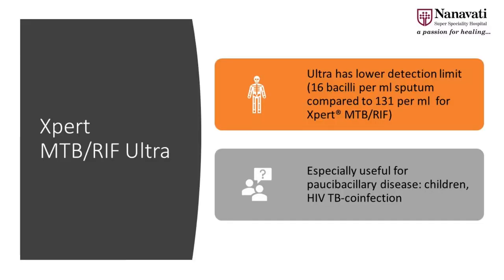The new thing in GeneXpert is the Expert Ultra. The older version used to pick up positive reports only if there were more than 1 bacillus per ml, whereas the new Ultra has a lower detection threshold, needing only 16 bacilli per ml, giving it a very high sensitivity. GeneXpert was originally approved only for pulmonary TB, but with Ultra it would be useful even for extra-pulmonary TB, especially in children who have paucibacillary disease.